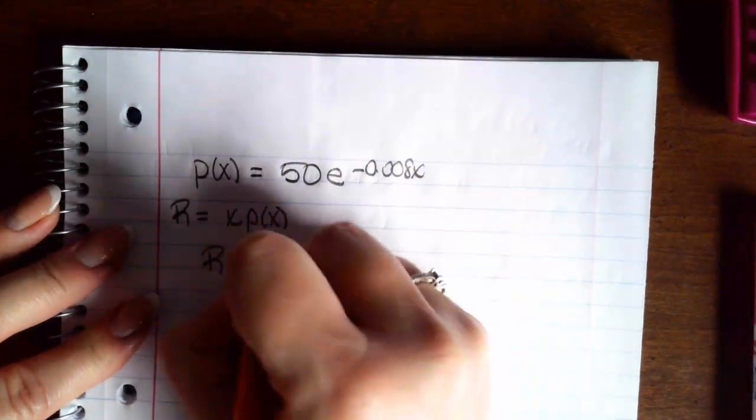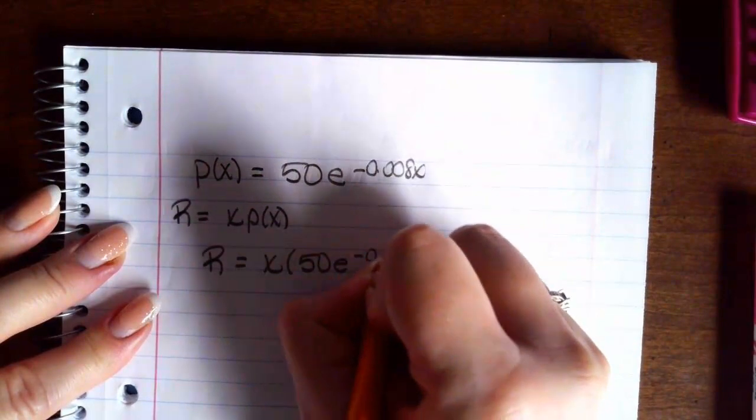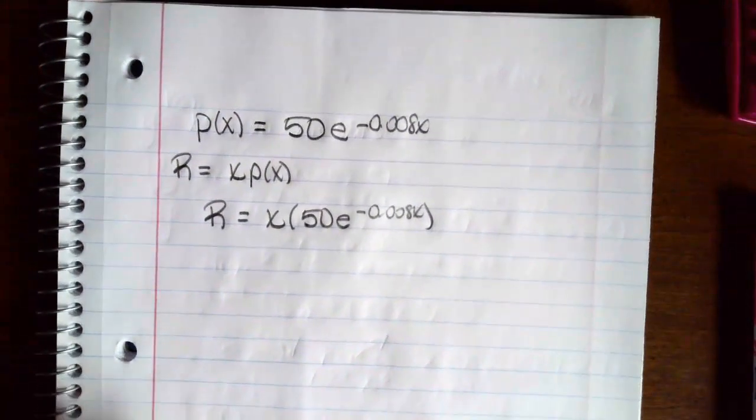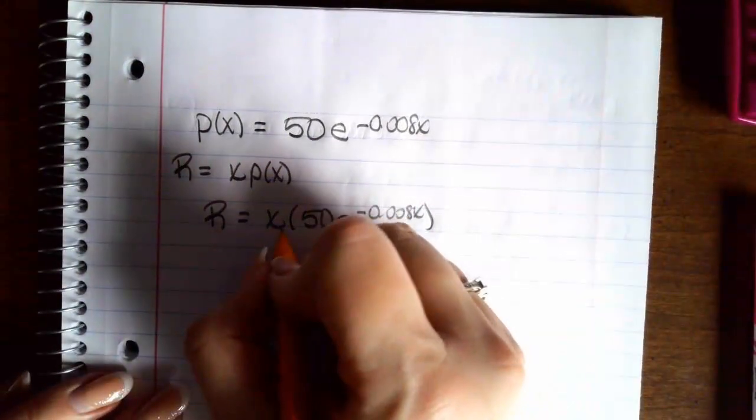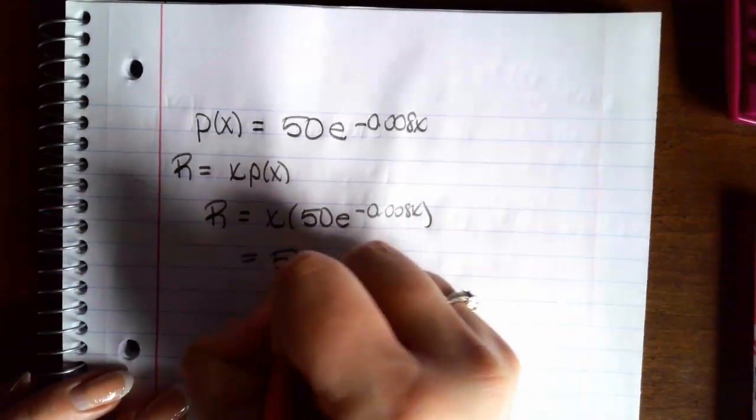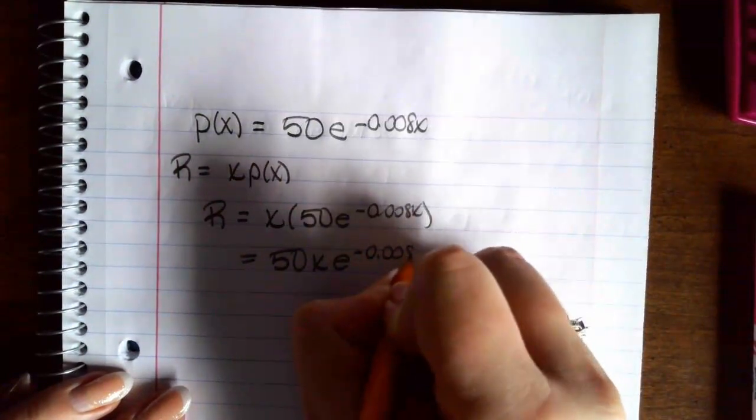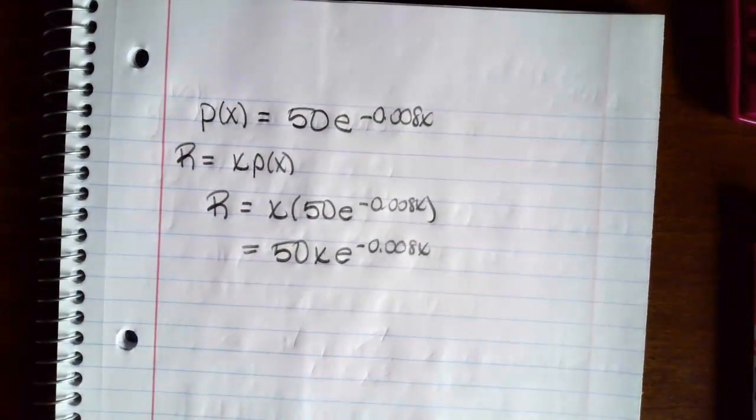So that means our revenue function is x times 50 times e to the negative .008x. So I'm going to just rewrite this a little bit. So I have 50x e to the negative .008x. Okay, so that's my revenue function. Now I need to maximize my revenue.